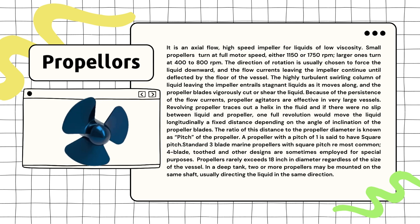A propeller agitator is a device used to mix liquids, especially those with low thickness. It works by spinning small propellers very quickly, at around 1150 to 1750 RPM for smaller ones and around 400 to 800 RPM for larger ones. The propeller usually spins in a way that pushes the liquid downward.